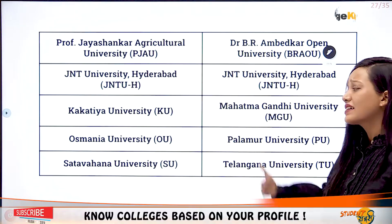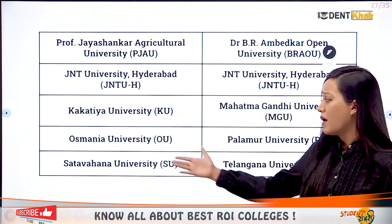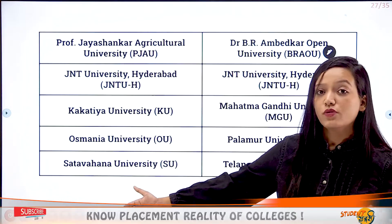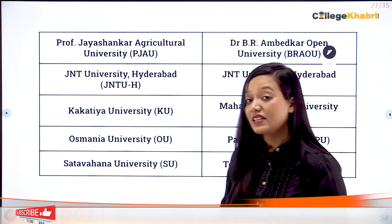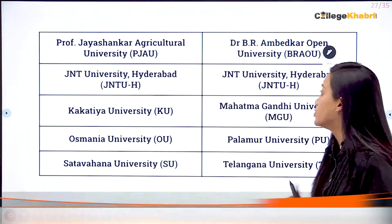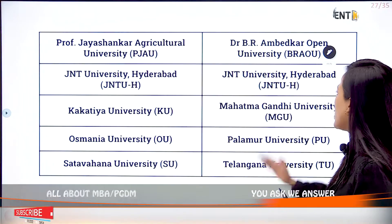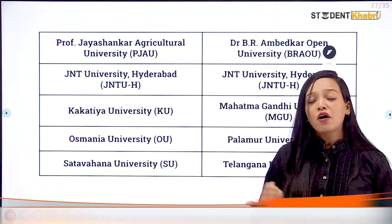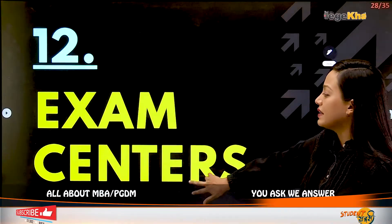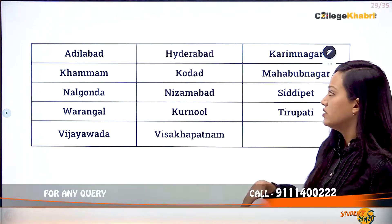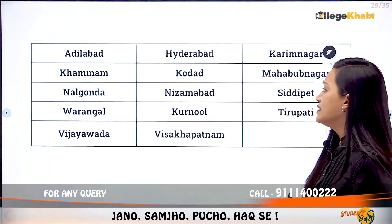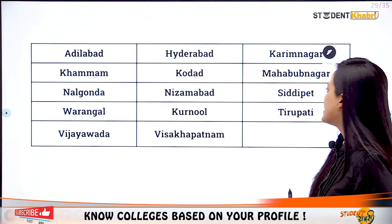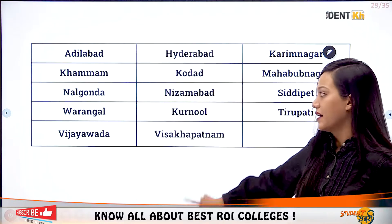Participating institutes include JNTU Hyderabad, Kakatiya University Warangal, Osmania University, Dr. B.R. Ambedkar Open University, Mahatma Gandhi University, Palamur University, and Telangana University, among others. If you want admission to Osmania University, you must write this entrance examination. Exam centers are located in Hyderabad, Kodad, Nizamabad, Kurnool, Visakhapatnam, Vijayawada, Warangal, Nalgonda, and other cities in Telangana.